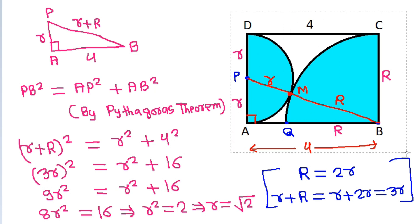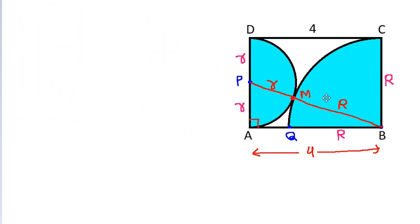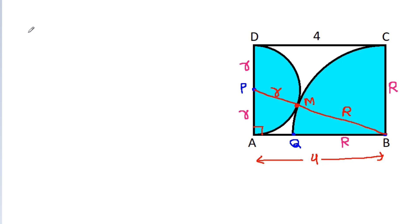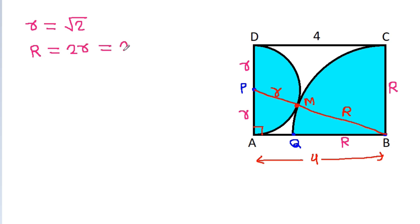We have r equals the square root of 2, and capital R equals 2 times small r, which equals 2 times the square root of 2.